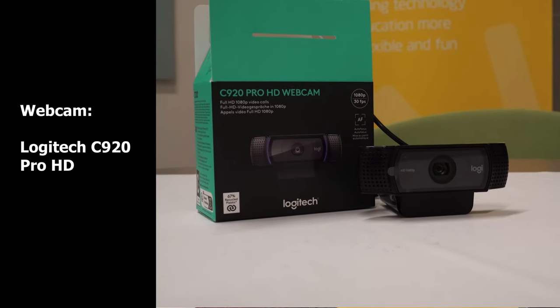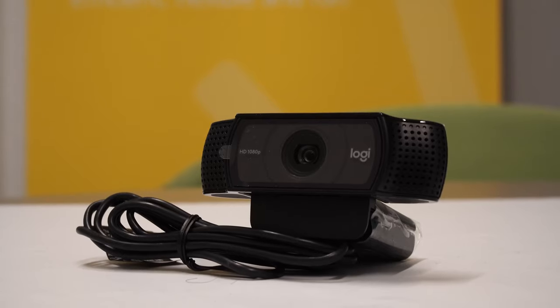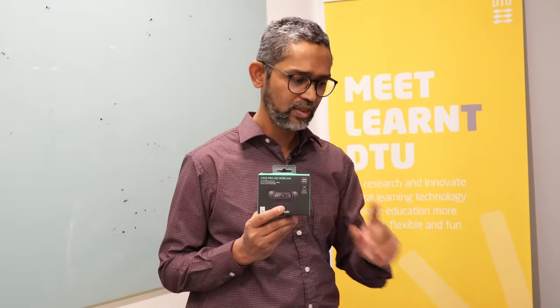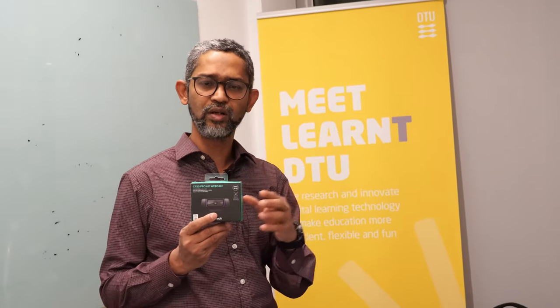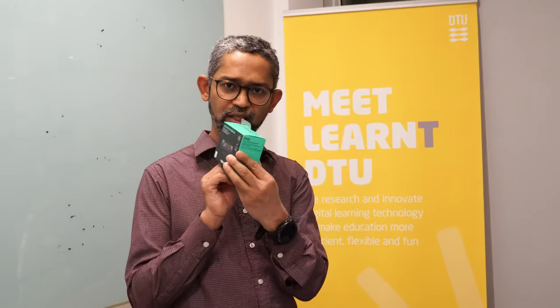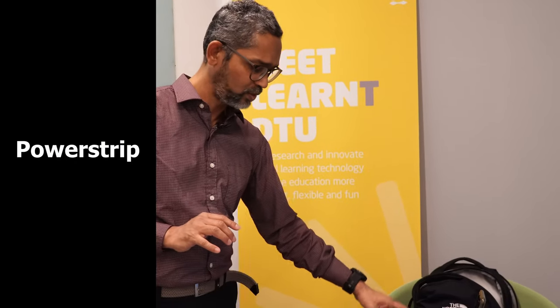The next item is a Logitech C920 HD webcam. There are two reasons: first, imagine a laboratory scenario where the laptop camera is not enough and cannot rotate. I need to be able to change the orientation of the webcam head, so that's why it's included. My 11th item is the power strip, which I already talked about. Now let's get started with setting everything up.